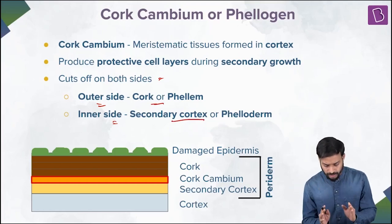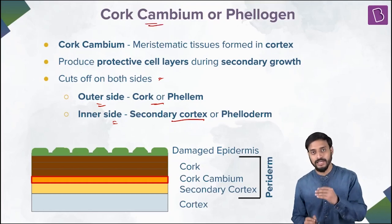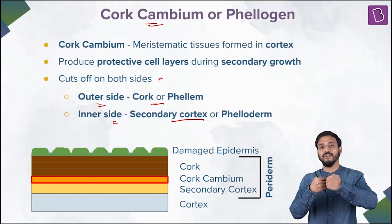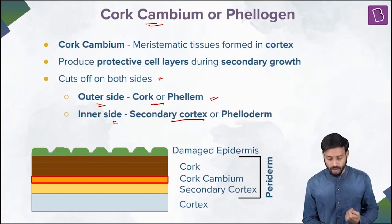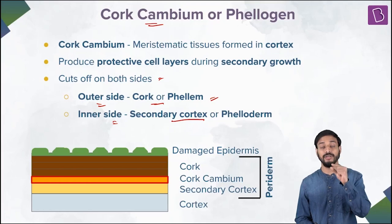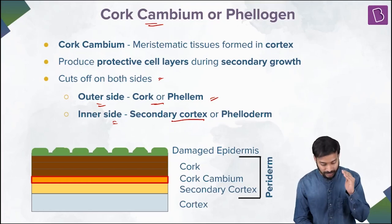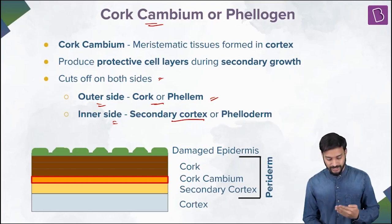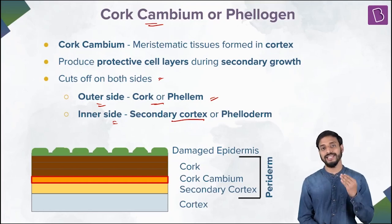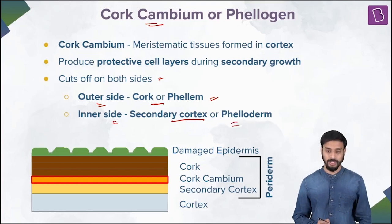There are a lot of terms, so don't get confused. The phelogen is the cork cambium. The outer side it forms is the cork — it has suberin deposits, it's impervious to water, and it's called phellem. The inner side is the secondary cortex called the pheloderm.